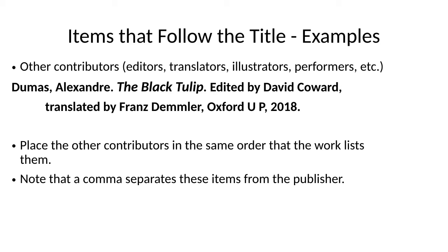Other contributors — editors, translators, illustrators, et cetera. Here's an example of a book that has both an editor and a translator, translated from the French and edited for various reasons. Alexander Dumas, Black Tulip, edited by David Coward, comma, translated by Franz Demler, comma, Oxford University Press, et cetera. Place the other contributors in the same order that the work lists them — in this case, the editor's name comes before the translator's. The commas separate each one.